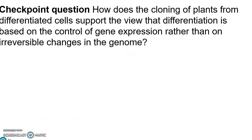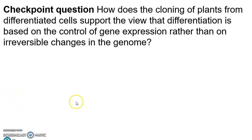Here is a checkpoint question: How does the cloning of plants from differentiated cells support the view that differentiation is based on the control of gene expression rather than on irreversible changes in the genome? The answer is that if you have a differentiated cell and can produce a whole new plant — as in the carrot example — then that cell, even though it was differentiated, still had the genetic information and ability to differentiate into all of the cell types present in carrot plants.